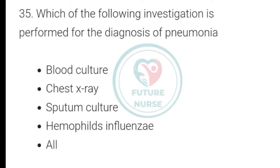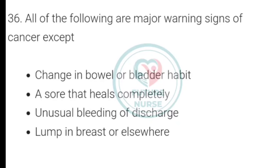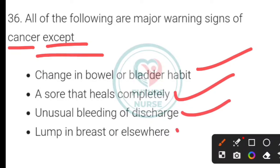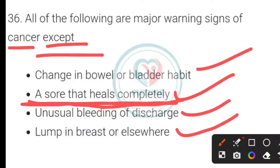All of the following are major warning signs of cancer except which one? Options: change in bowel and bladder habit, a sore that heals completely, or unusual bleeding or discharge. The correct answer is a sore that heals completely — this is not included among the warning signs of cancer.